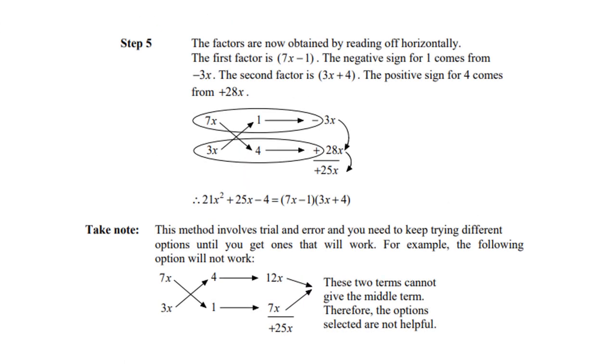Insert the signs as indicated below. Step 5: The factors are now obtained by reading off horizontally. The first factor is 7x minus 1. The negative sign for 1 comes from the negative 3x. And the second factor is 3x plus 4. The positive sign for 4 comes from positive 28. Therefore, the final answer is 7x minus 1 in the first bracket, and 3x plus 4 in the second bracket.